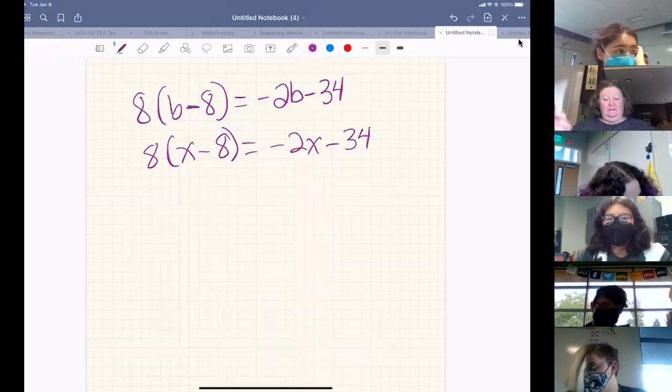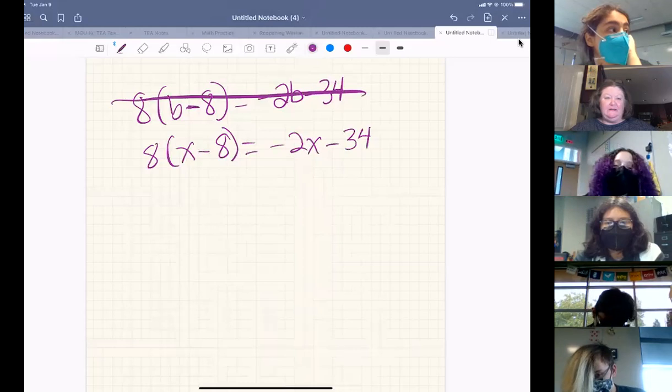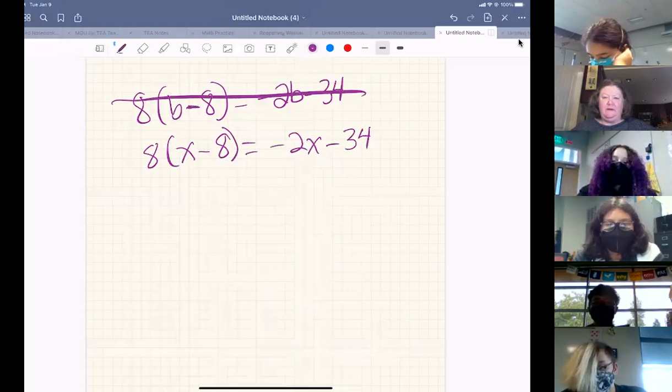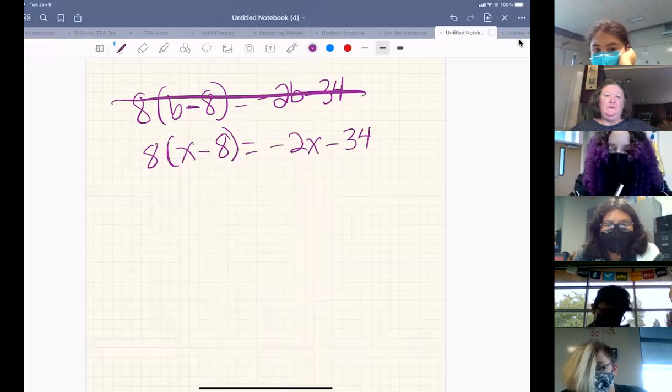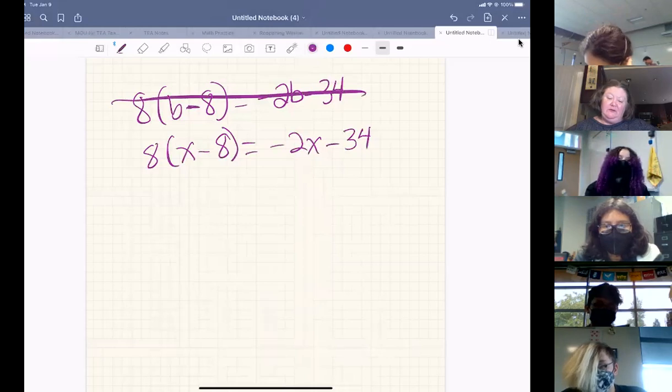All right, so all I did with the first is I crossed this off because I didn't like the variable and I just rewrote the problem with a variable I like using. It's really more about my handwriting and I didn't want that B to look like a six. So I see distribution has to happen.